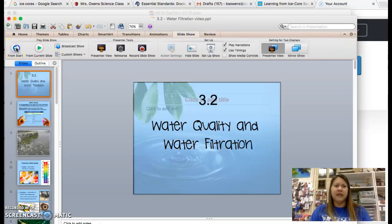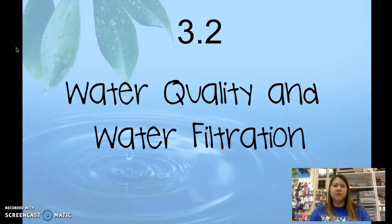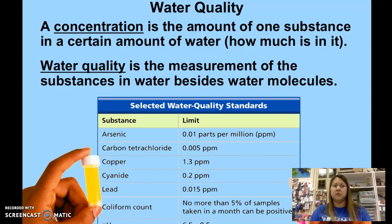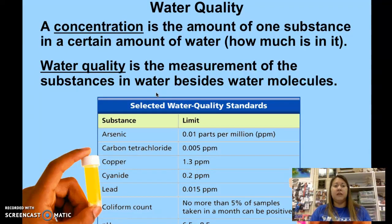Hi super scientists, we're going to be looking at water filtration and water quality indicators. We've talked a little bit about those already on one of your charts. Water quality is looking at the measurement of substances in the water besides water molecules — specifically the concentration, the amount of a substance in the water that's not supposed to be there.